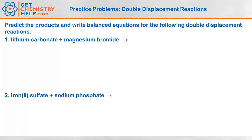Predict the products and write balanced equations for the following double displacement reactions. The first one is lithium carbonate reacts with magnesium bromide. Lithium is Li⁺ and carbonate is CO₃²⁻, so lithium carbonate must be Li₂CO₃.